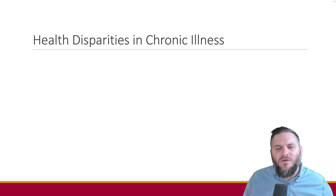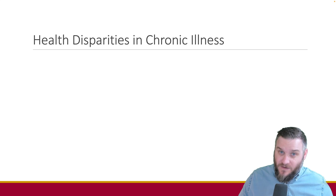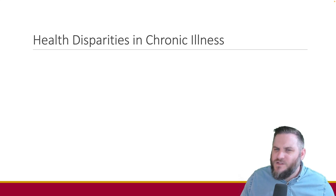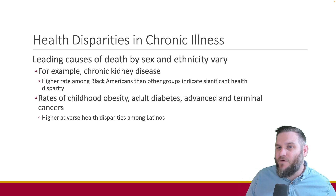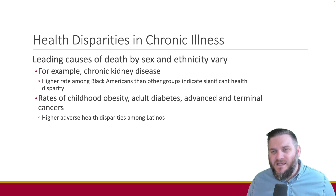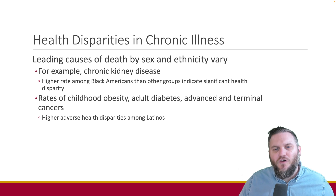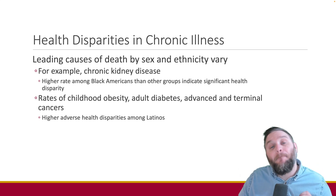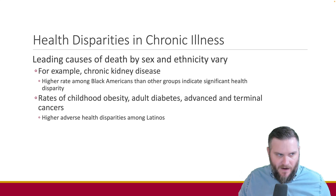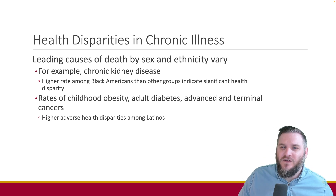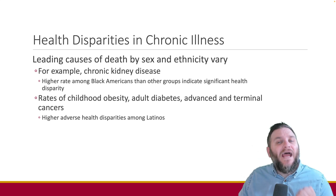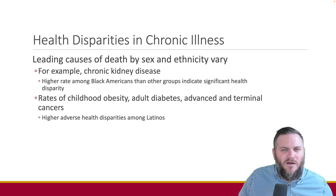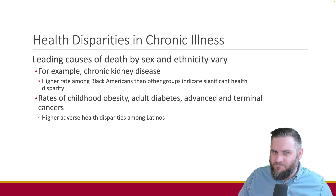Let's first talk about health disparities in chronic illness. Our bodies may all work in similar ways, but our experiences with chronic illness can vary greatly depending on our sex, ethnicity, and social conditions. For instance, chronic kidney disease sees a higher rate among Black Americans — a significant health disparity. Higher adverse health disparities are also seen among Latinos for conditions like hypertension, childhood obesity, adult diabetes, and advanced cancers. Understanding these disparities can help us work toward a more equitable health care system.